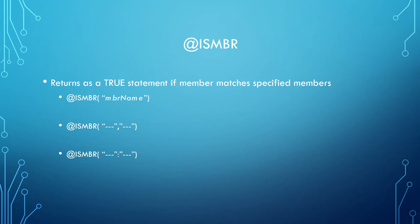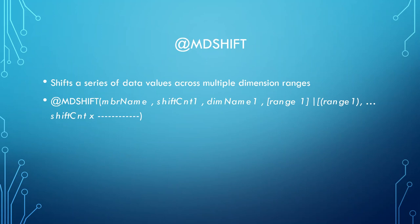Our second function is @MDSHIFT. What @MDSHIFT does is it shifts a series of data values across multiple dimension ranges. The syntax is member name, comma, shift count, comma, dimension name. What the shift count does is it shifts that specific dimension a certain amount of cells, the specified amount of cells. You can shift it one cell forward, two cells forward, you can shift it backwards with negative one or negative two.